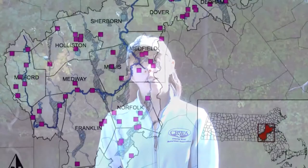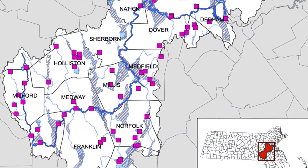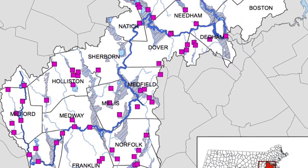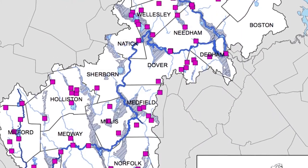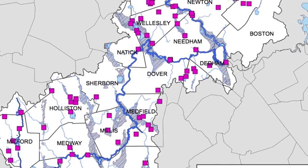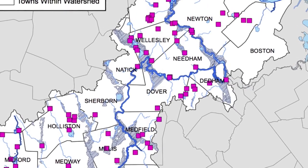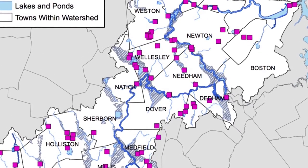My name is Julie Wood and I'm a senior scientist at Charles River Watershed Association, headquartered in Weston, Massachusetts. Although our office is in Weston, the Association's area of concern and focus is the entire 308 square miles of the Charles River watershed, encompassing 35 Massachusetts cities and towns.